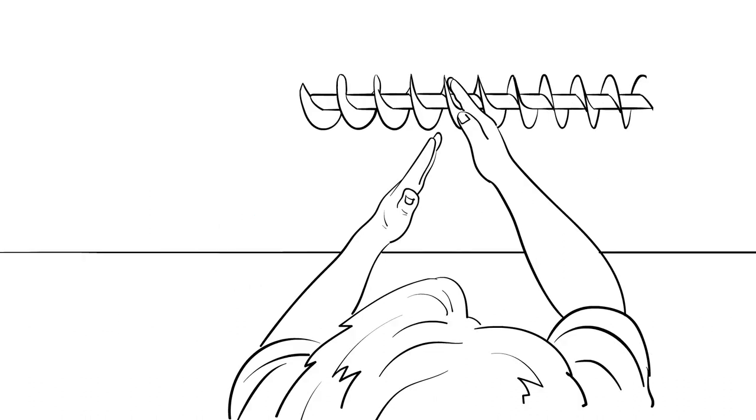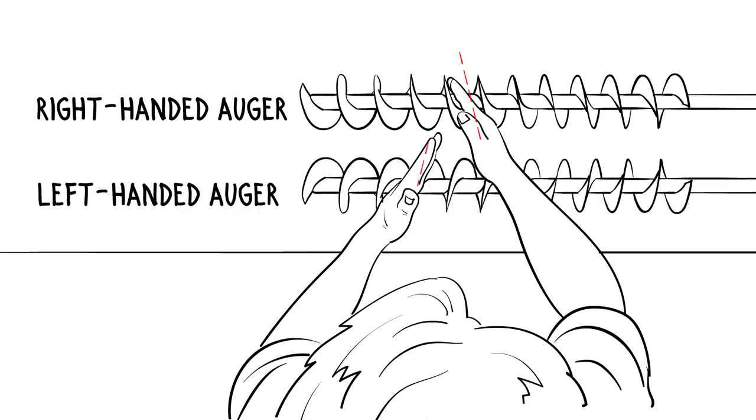If you have a right-handed auger, when you lay it down horizontally, your right hand should lay parallel to the flight if you hold it between the spirals. If you have a left-handed auger, perform the same test, but this time use your left hand.